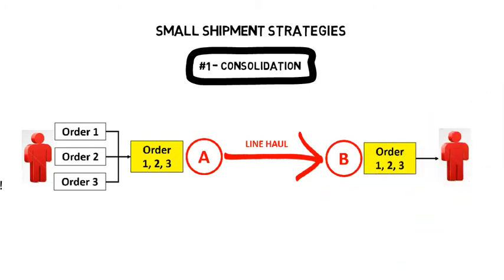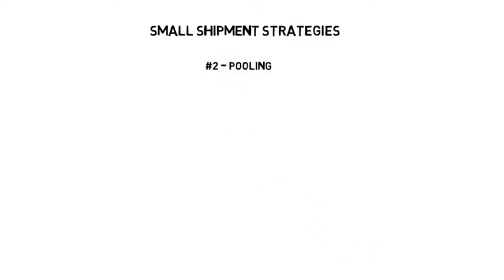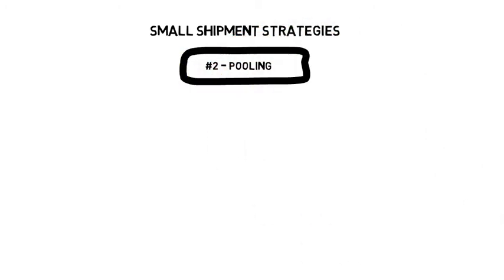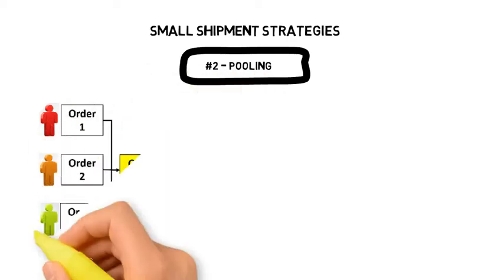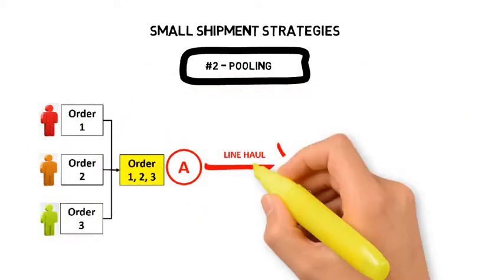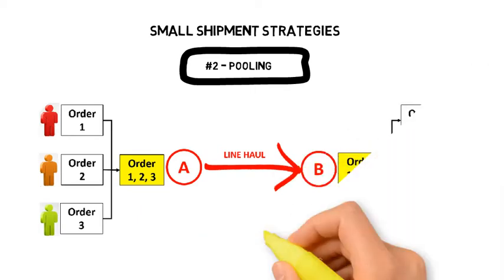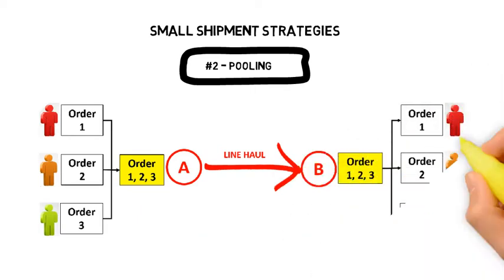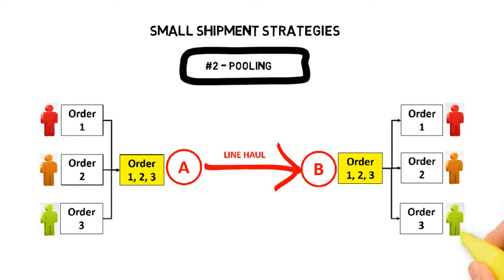At point B, the destination, the consolidated order is delivered to the customer. Strategy number 2 is pooling. At point A, the shipper consolidates multiple small shipments for different consignees into one large order before sending it to the destination by line haul. At point B, the consolidated order undergoes additional break bulk before each order is delivered to individual customers.